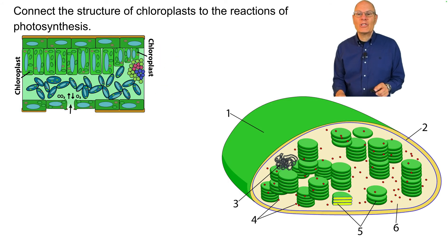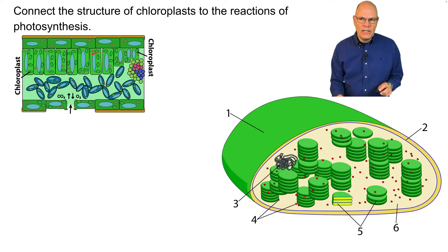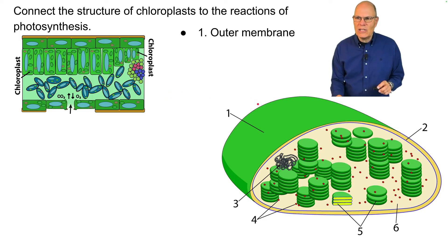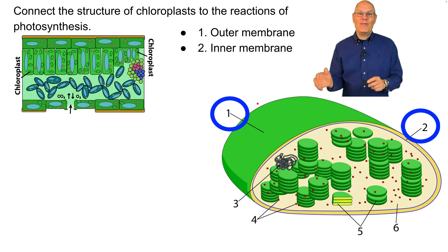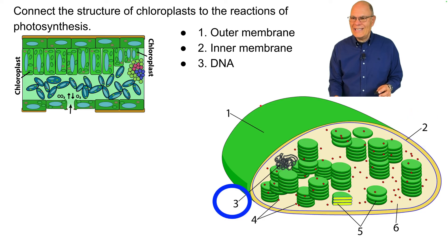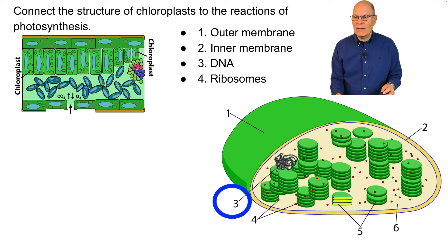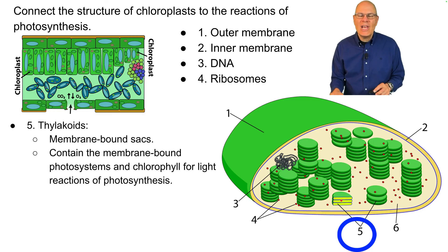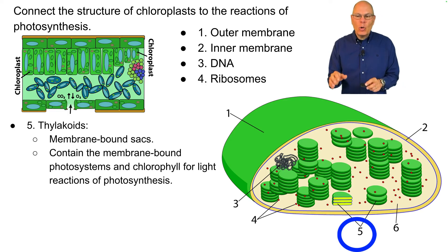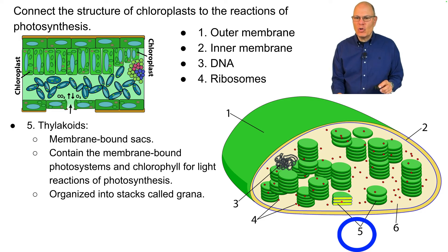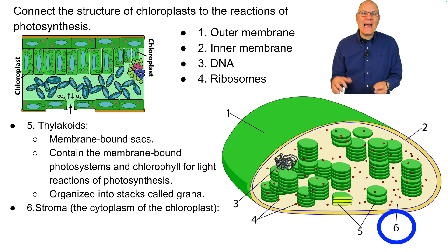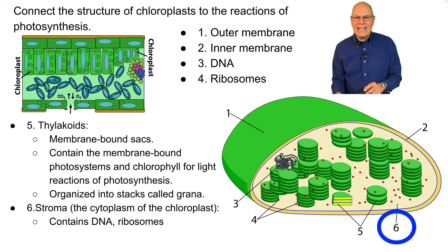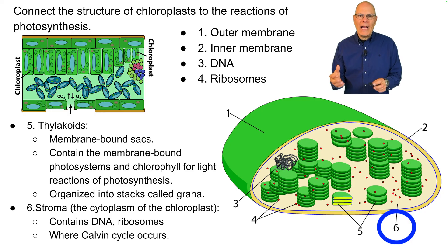Connecting the structure of chloroplasts to the reactions of photosynthesis: chloroplasts are found in cells within the leaf — many per cell. The chloroplast has an outer membrane and an inner membrane; the outer membrane is a vestige of its evolutionary origins. There's also DNA and ribosomes — remnants of the fact that chloroplasts were once independent living cells. Thylakoids are membrane-bound sacs containing the photosystems and chlorophyll for the light reactions. They're organized into stacks called grana. Surrounding them is the stroma — essentially the cytoplasm of the chloroplast — which contains DNA, ribosomes, and is where the Calvin cycle occurs, producing carbohydrates.